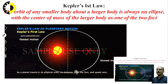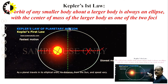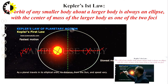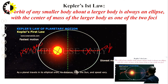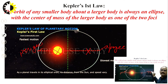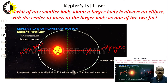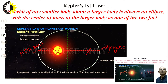Kepler's first law also introduces the concepts of perigee and apogee. The nearest point of the orbit to the focus is called perigee, and the farthest point is called apogee. As the object moves towards perigee, its velocity increases; as it moves towards apogee, its velocity decreases.